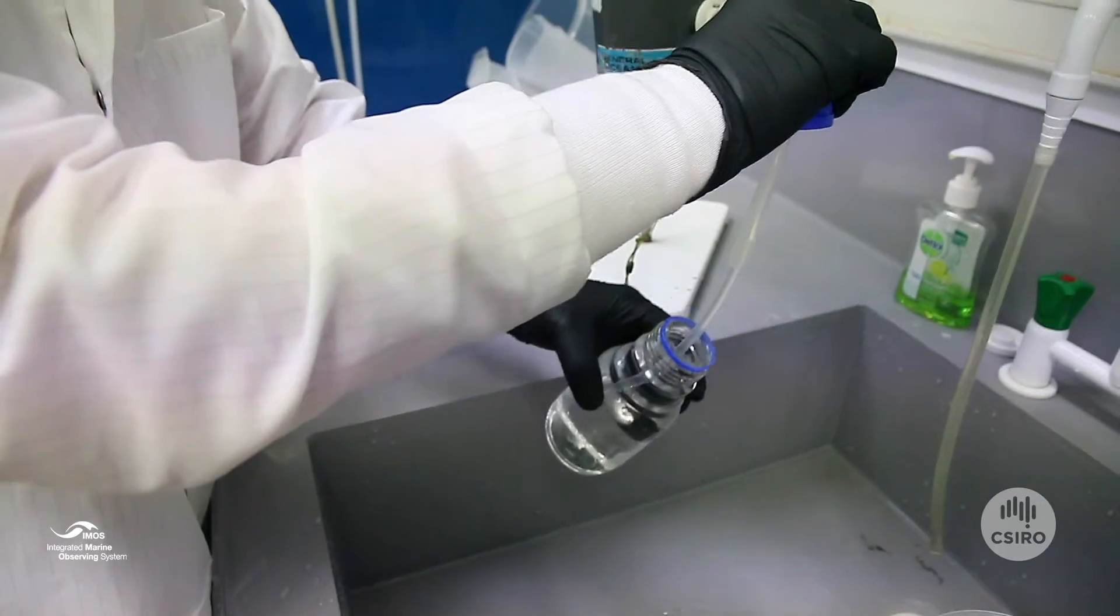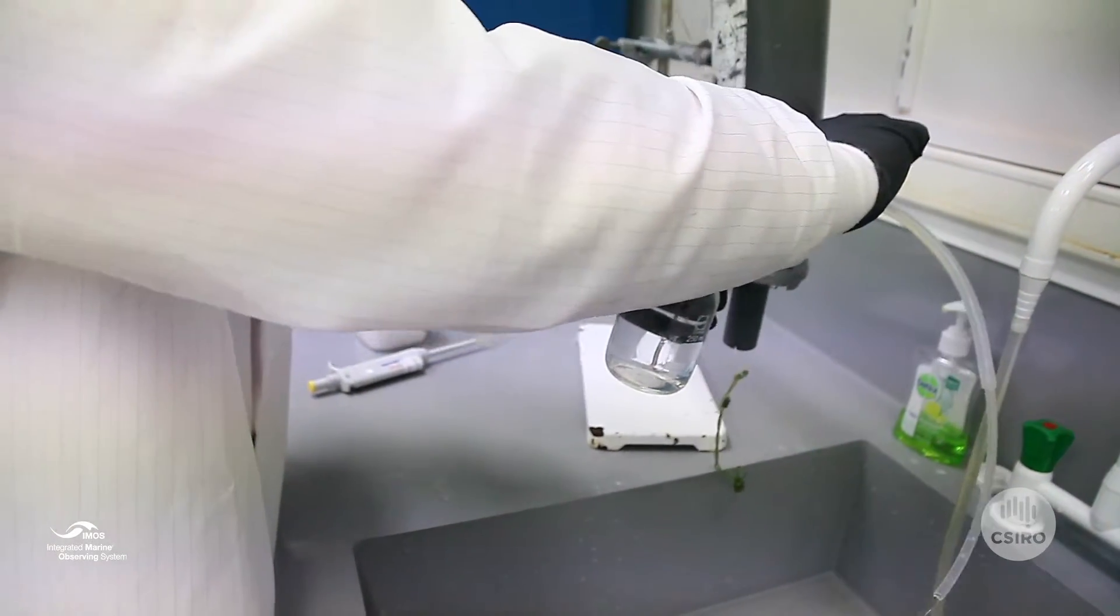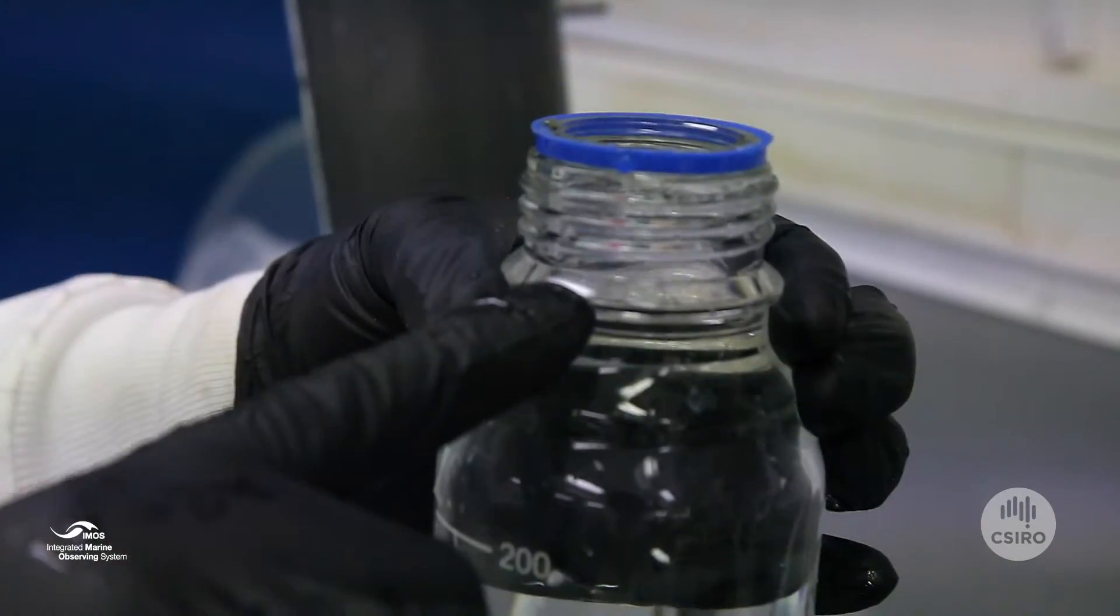Pinch the tube to stop the flow, and then pull out the spigot to stop the flow from the Niskin. This time you'll need to pour out some sample to achieve the right level. The right level is just at the glass ring.